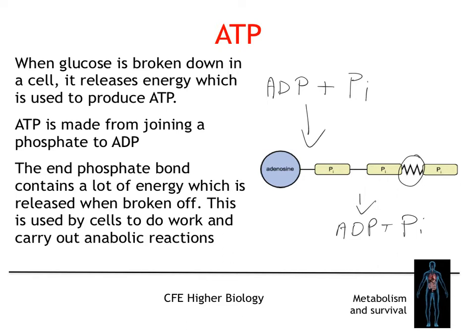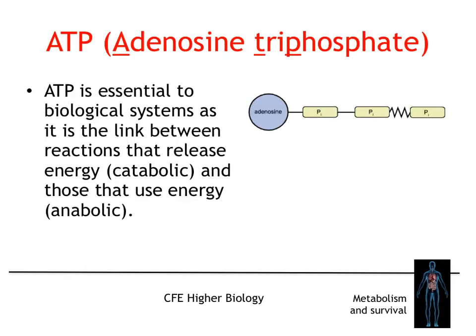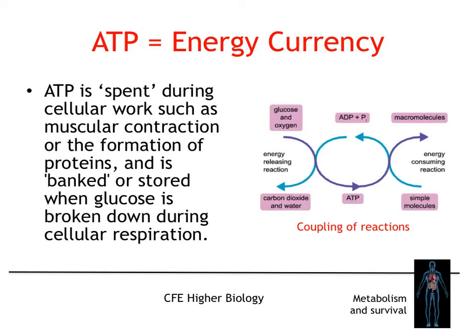When this bond is broken, the energy can be used by cells to carry out anabolic reactions — that is, synthesis reactions. ATP is essential in biological systems; it's the link between reactions that release energy — catabolic reactions — and those that use energy — anabolic reactions.